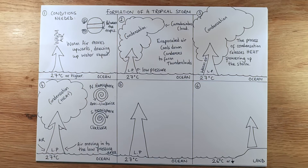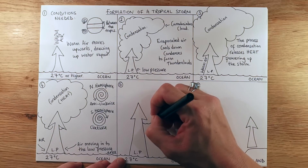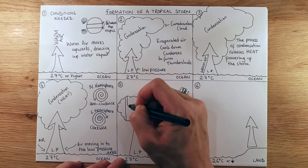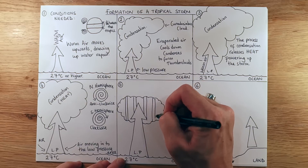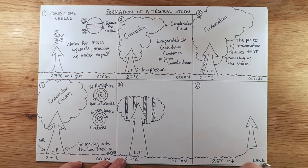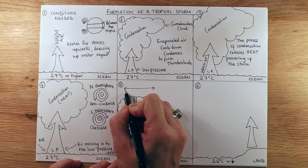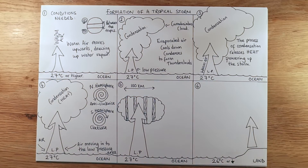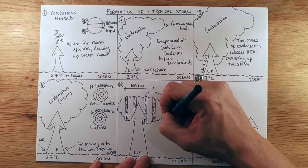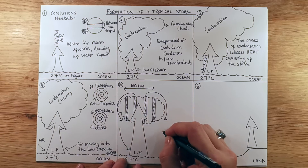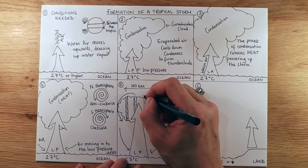In stage five, the storm is really growing — it's spinning with a huge amount of condensation and really big storm clouds. Drawing in some rain bands, also called rain walls, showing the structure of the storm. These storms are significant in size, reaching around 100 kilometres on average. We've got air moving over and around the system, then down to fill that low pressure area.